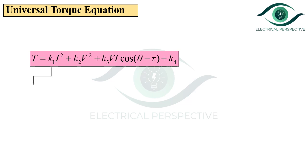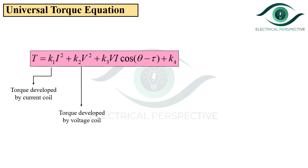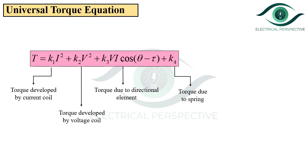Here, K1·I² is the torque developed by the current coil, K2·V² is the torque developed by the voltage coil, K3·VI·cos(θ − τ) is the torque due to the directional element, and K4 is the torque due to the spring. Here θ is the angle between V and I, and τ is the maximum torque angle.